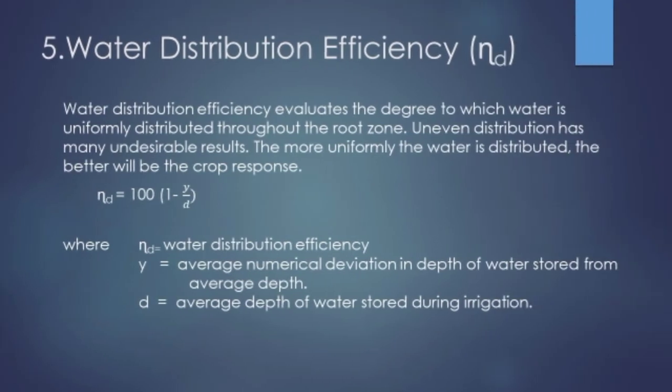The fifth is water distribution efficiency, which measures how uniformly irrigation water is applied across an agricultural field. Uniform application throughout the field and root zone is very important. It is measured using two factors: y, the numerical deviation in depth of water stored from average depth, and d, the average depth of water stored during irrigation. The equation is: 100 × (1 − y/d).